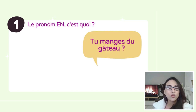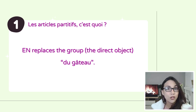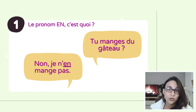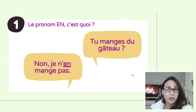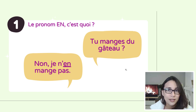Here's an example. Tu manges du gâteau? Non, je n'en mange pas. EN here replaces the direct object du gâteau. So instead of saying non, je ne mange pas de gâteau — I don't want to repeat gâteau — I'm simply going to say non, je n'en mange pas. So let's take a look at how we can use the pronoun EN exactly in French.